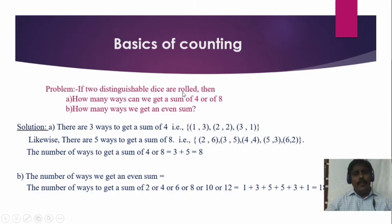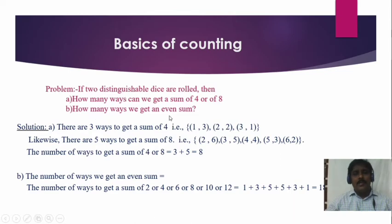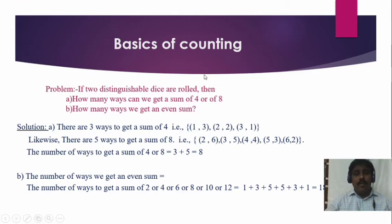If two distinguishable dice are thrown, the formula when a die is rolled n times is 6 power n. For two dice, that is 6 squared equals 36 possible outcomes. The question asks how many ways can we get a sum of 4 or 8. For a sum of 4: there are 3 ways — (1,3), (2,2), (3,1). These values must be within the 36 elements from (1,1) up to (6,6).